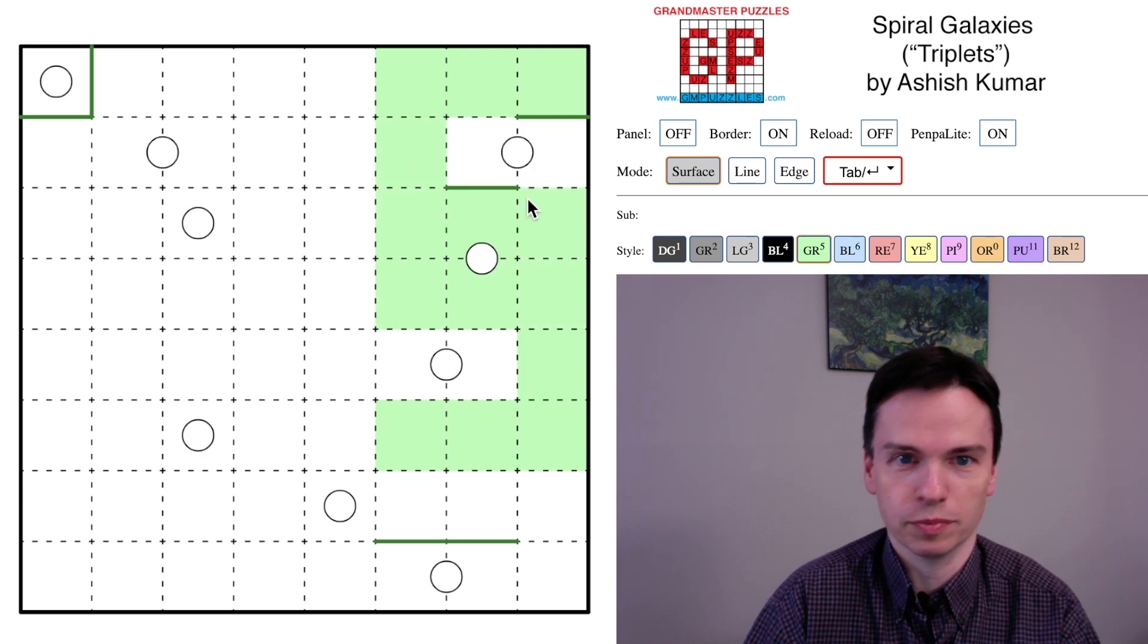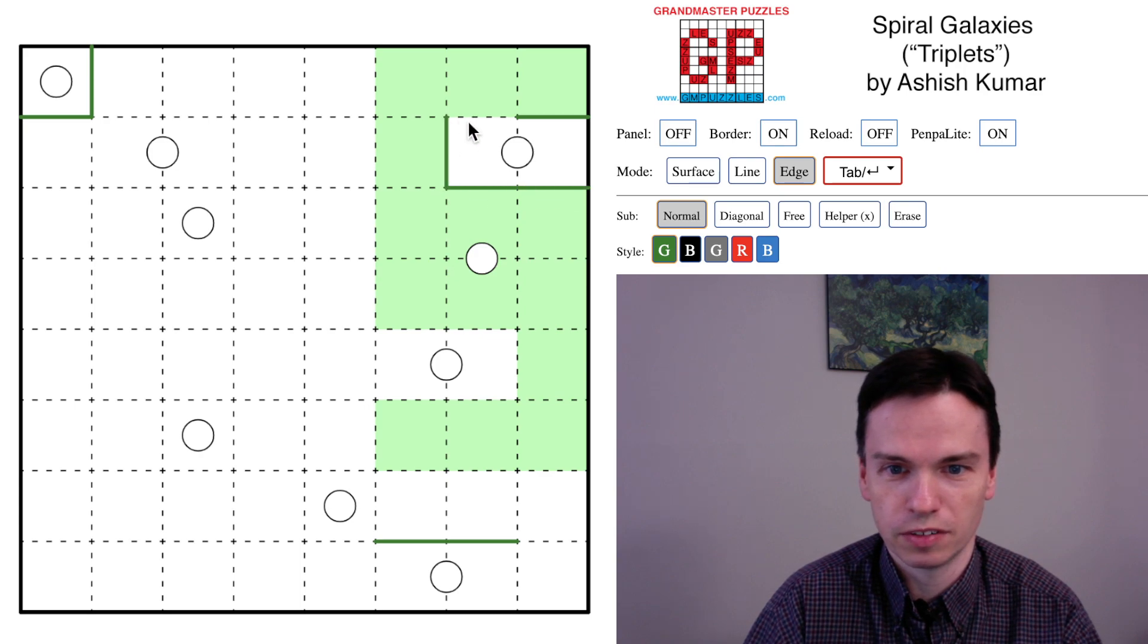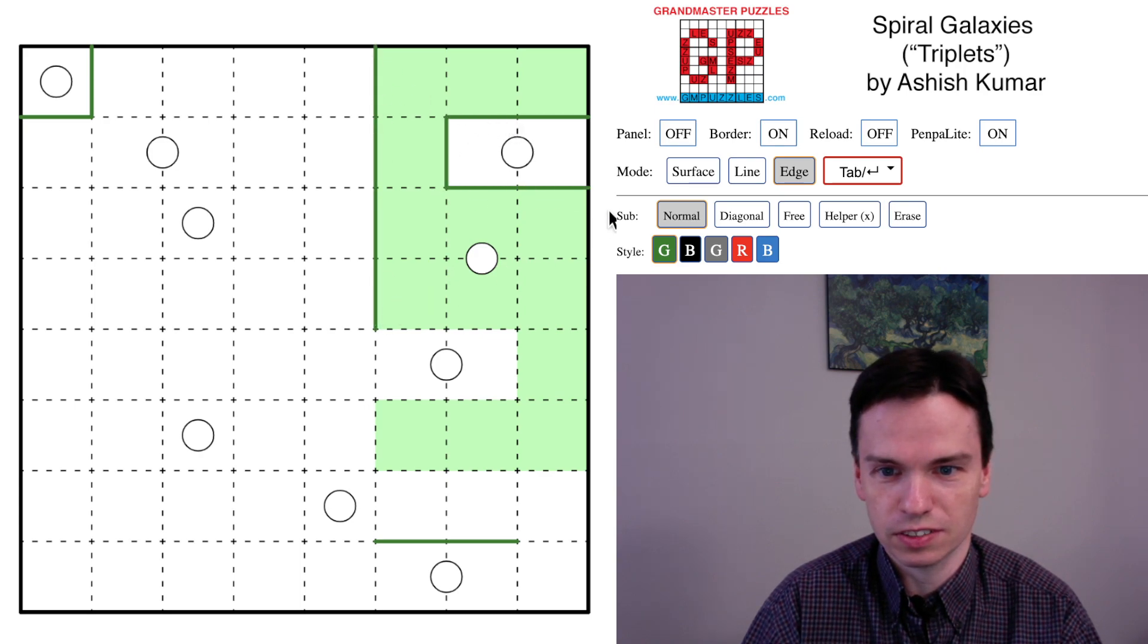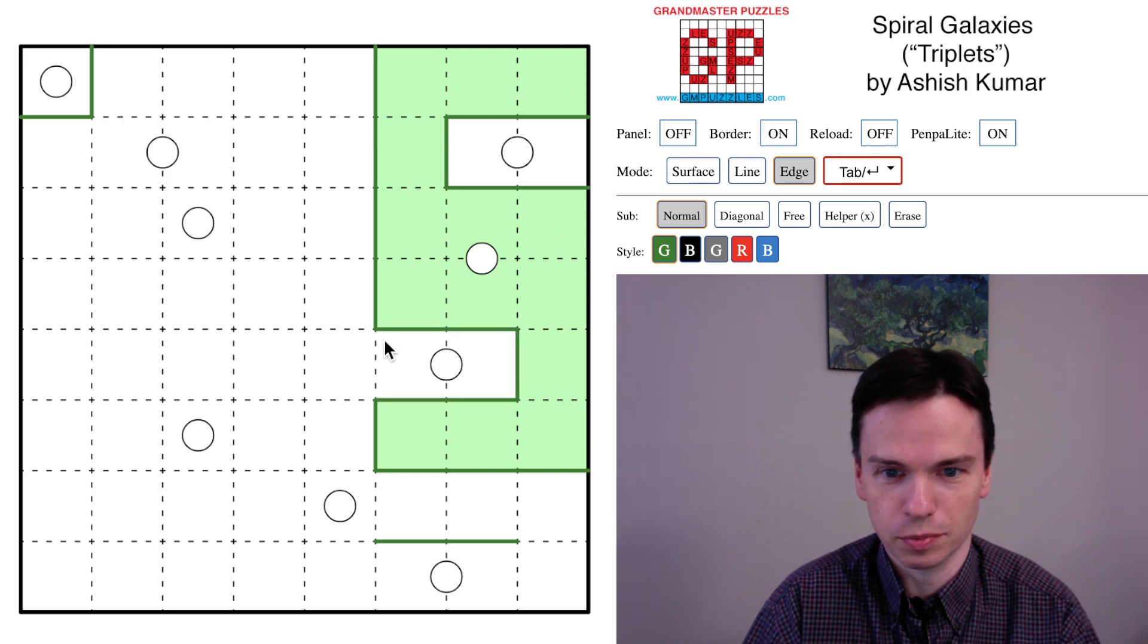In doing that we'll see we form this S-shape which we'll start to mark off. This left edge here is the same as the right edge of the grid. This bottom edge is the same as the top edge of the grid, so this is an exact and completed shape. There are no more cells we can take.